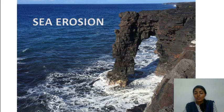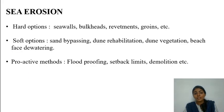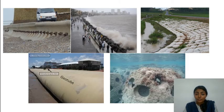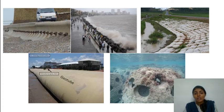Mitigation measures include hard options like sea walls, bulkheads, revetments, and groins, as well as soft options like dune rehabilitation, dune vegetation, and beach face dewatering. Hard options are more expensive and not eco-friendly; they are found to interfere with local wave hydrodynamics and sediment accumulation, so they are not much preferred. Soft options are more preferred than hard options.